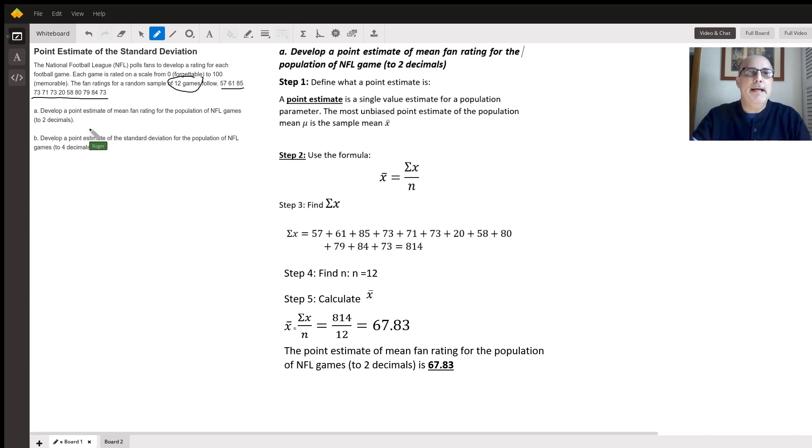For Part A, first thing I'm going to do is define what a point estimate is. A point estimate is a single value estimate for a population parameter. For this question, the most unbiased point estimate of the population mean mu is the sample mean x-bar. Mu is the population symbol, and x-bar is the symbol for sampling.